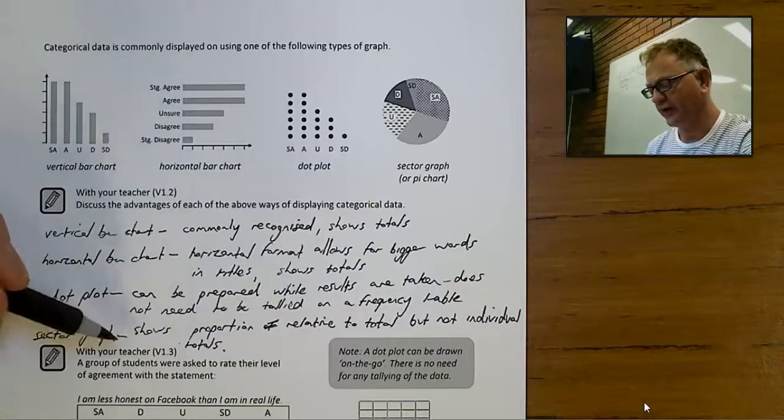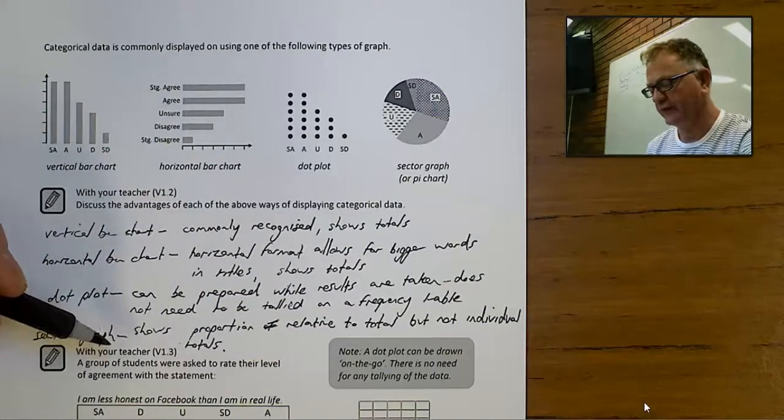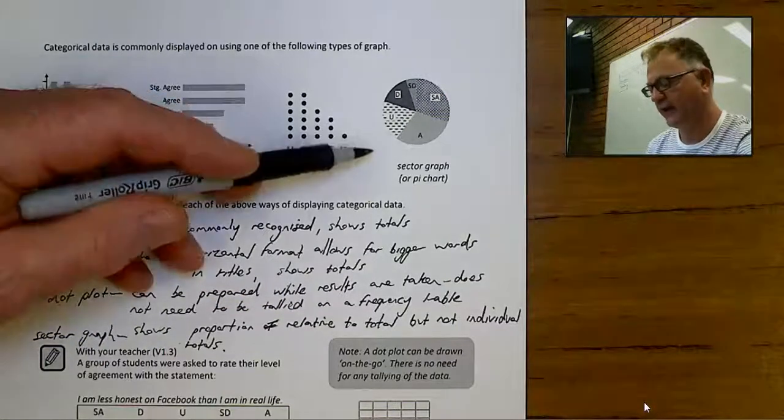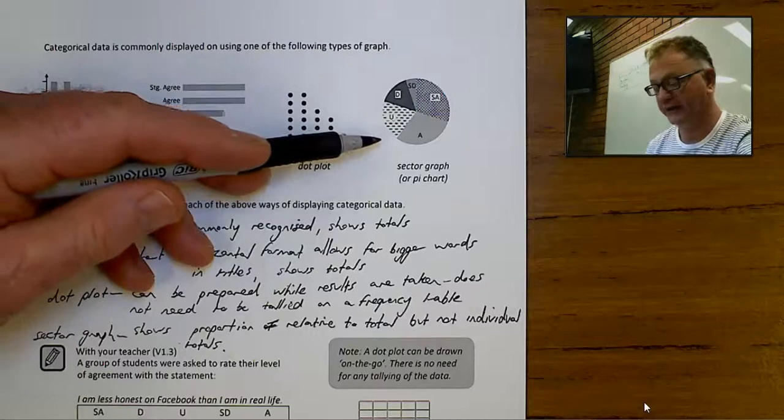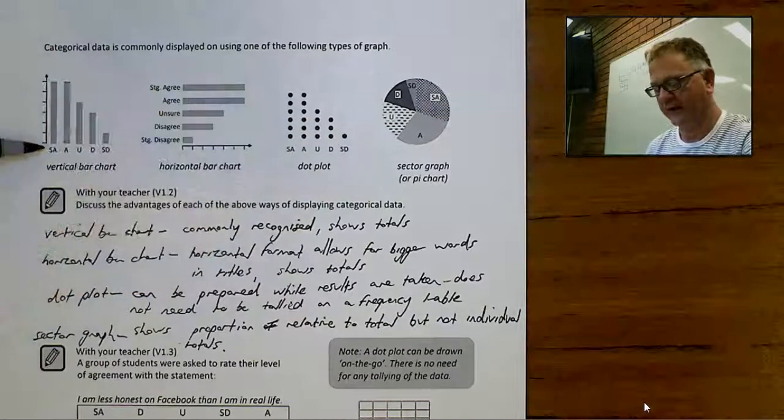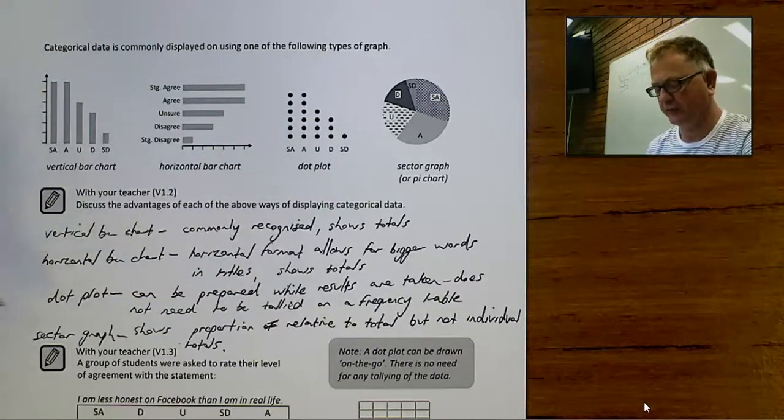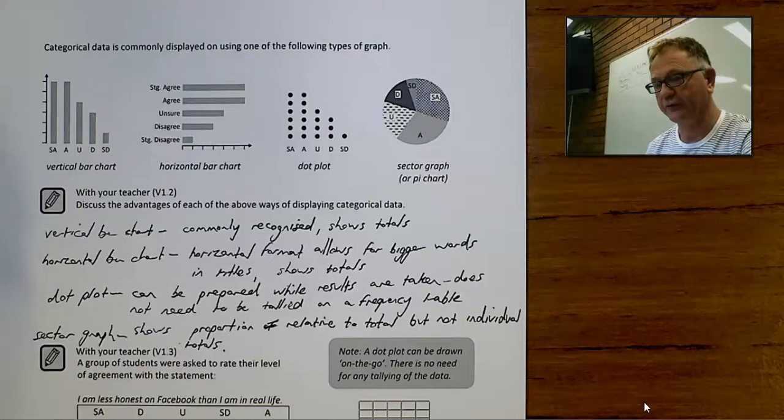What you miss out on, though, is the actual total. You can't see from this graph how many people agreed. You can see what percentage, but you can't see the number of people who agreed, which you could do on all of the other forms of the graph.